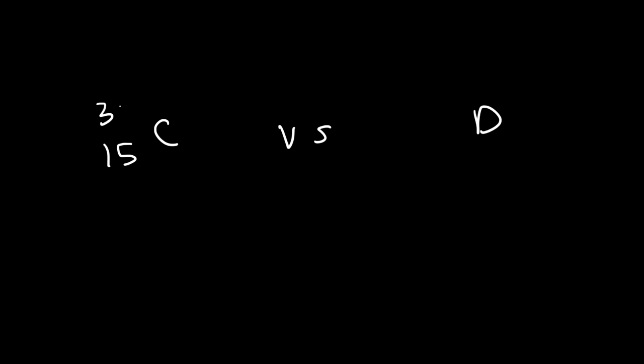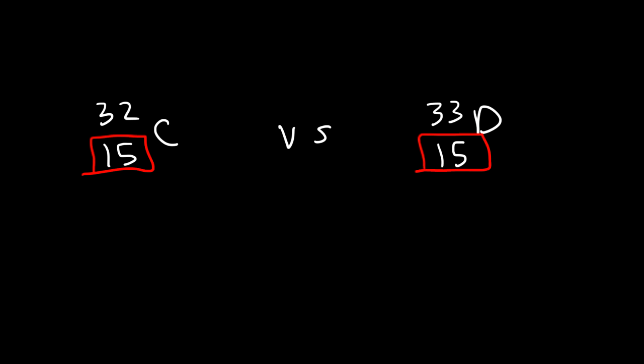Now let's compare substance C and substance D. Substance C has an atomic number of 15 and a mass number of 32; substance D has an atomic number of 15 and a mass number of 33. Are these two substances isotopes of each other? The answer is yes. They share the same atomic number, meaning C and D are composed of the same element, however the mass numbers are different so the number of neutrons will also be different. Substance C and D are isotopes of each other.